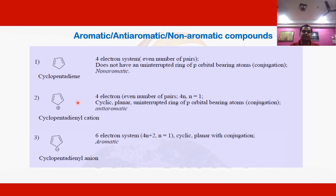Taking the example of cyclopentadienyl cation, it also has two pi bonds giving four pi electrons, following the 4n anti-aromatic rule. At the corner there is a positive charge, and due to this positive charge a continuous pi electron cloud is possible above and below the ring. Therefore cyclopentadienyl cation with uninterrupted pi electron cloud is an example of an anti-aromatic compound.